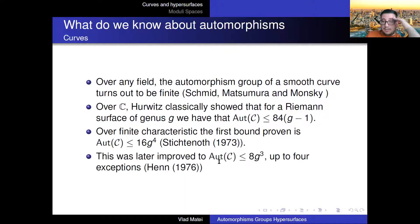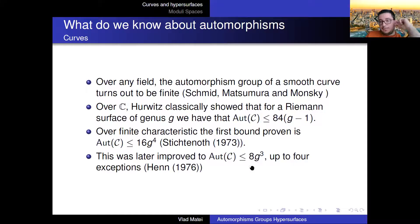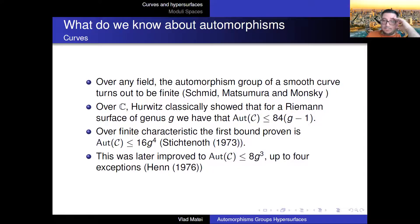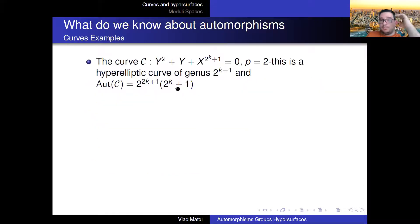In characteristic p you can improve the bound to 8g³, with four exceptions. There's a whole industry of people working on improving these bounds and finding special cases. Let me give some examples of curves with large automorphism groups. In characteristic two there is a curve whose genus is large and you can see a pretty large automorphism group.